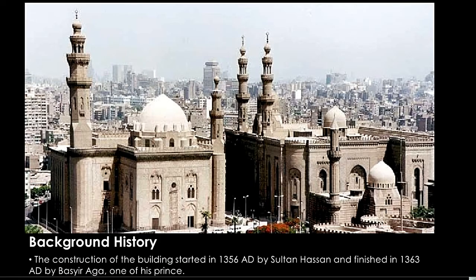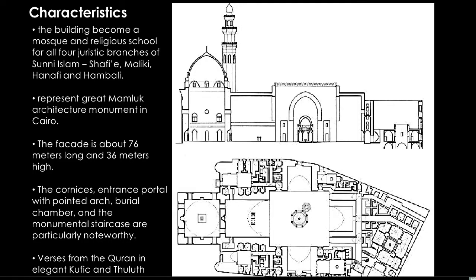The history and background: the construction of the building started in 1356 AD by Sultan Hasan and was finished in 1363 by Biasir Aga, one of his associates. The building became a mosque and a religious school for all four juristic branches of Sunni Islam: Shafi'i, Maliki, Hanafi, and Hanbali. It represents a great Mamluk architectural monument in Cairo.